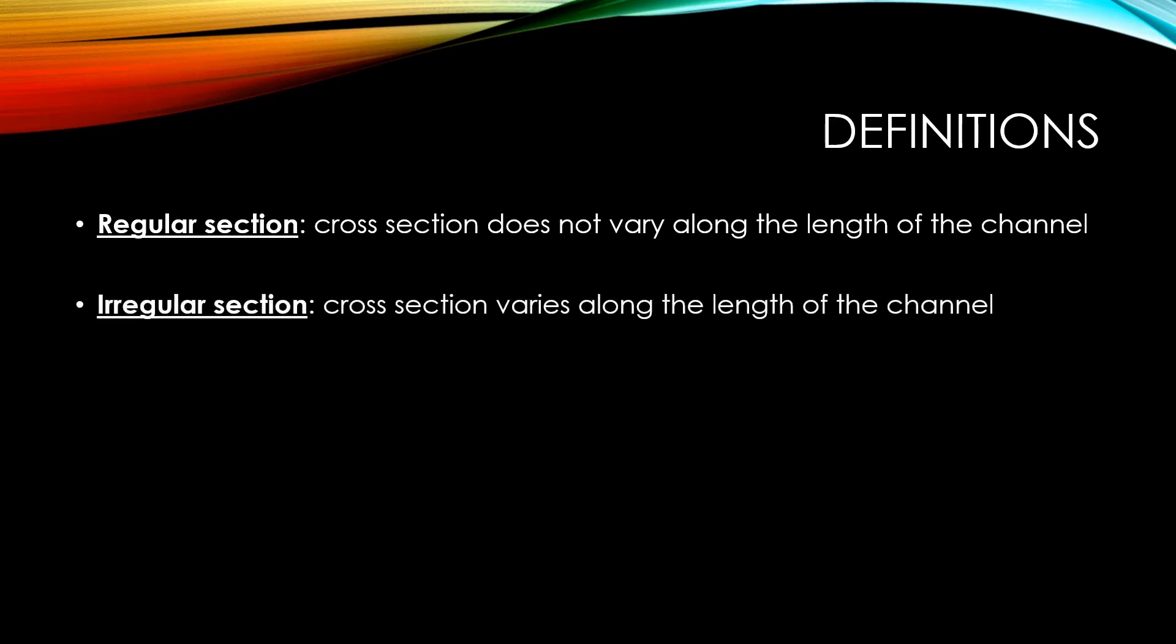Conversely, an irregular section is a cross-section that varies along the length of a channel. A prismatic channel is that channel that has regular cross-sections.